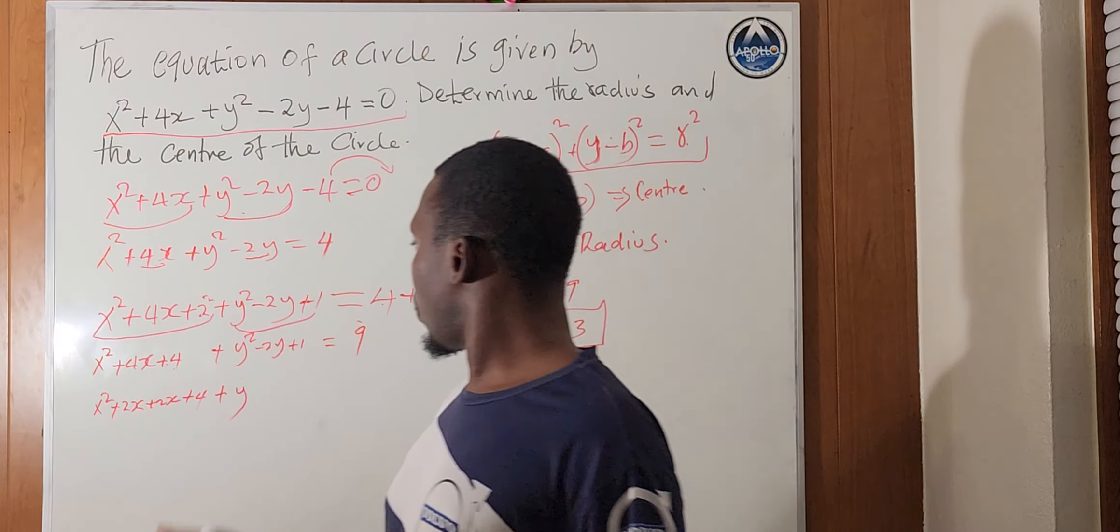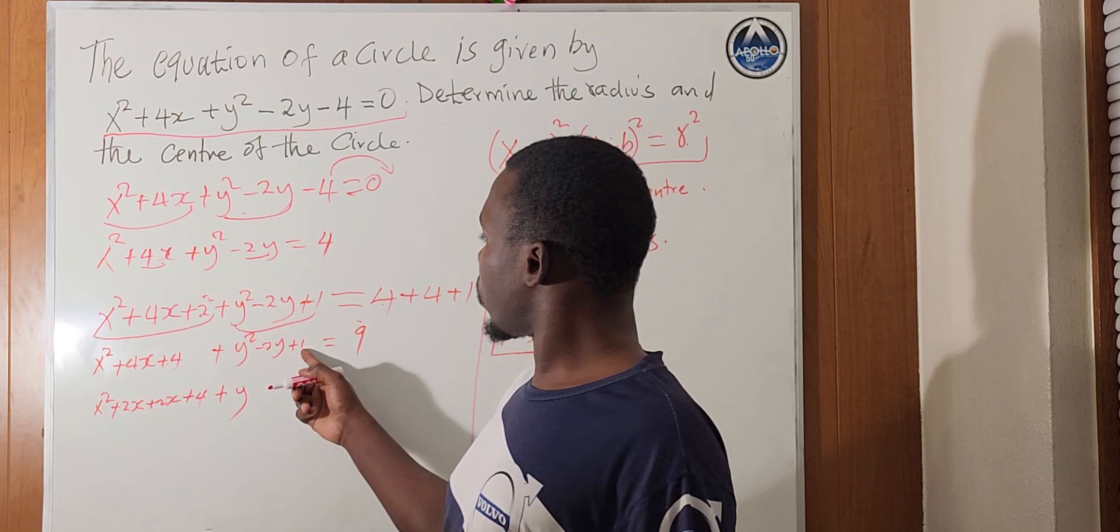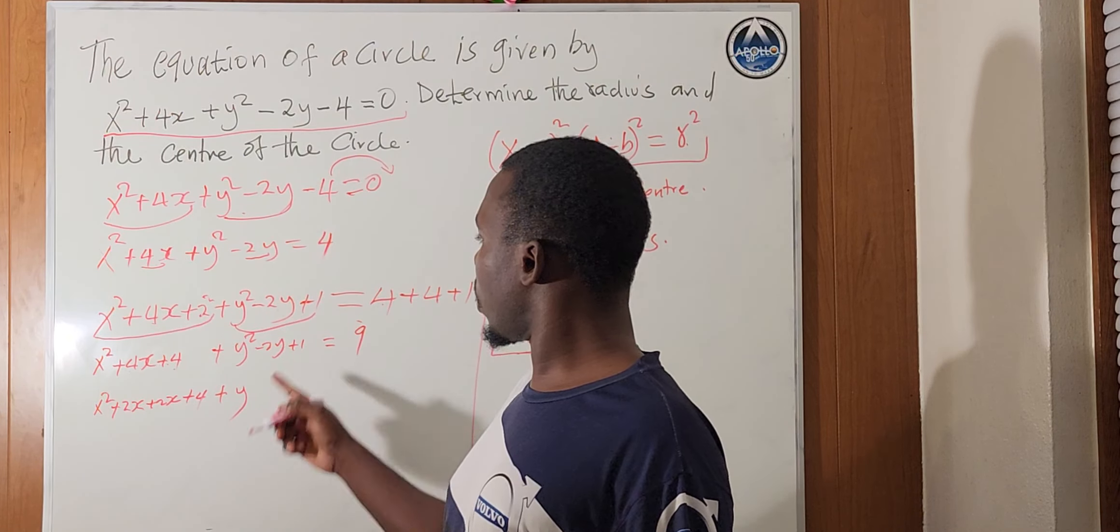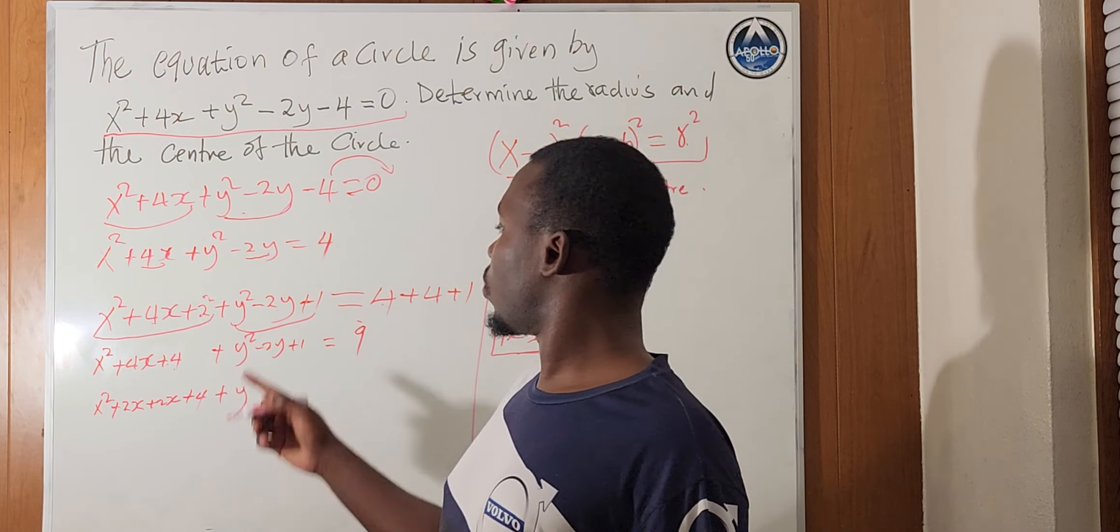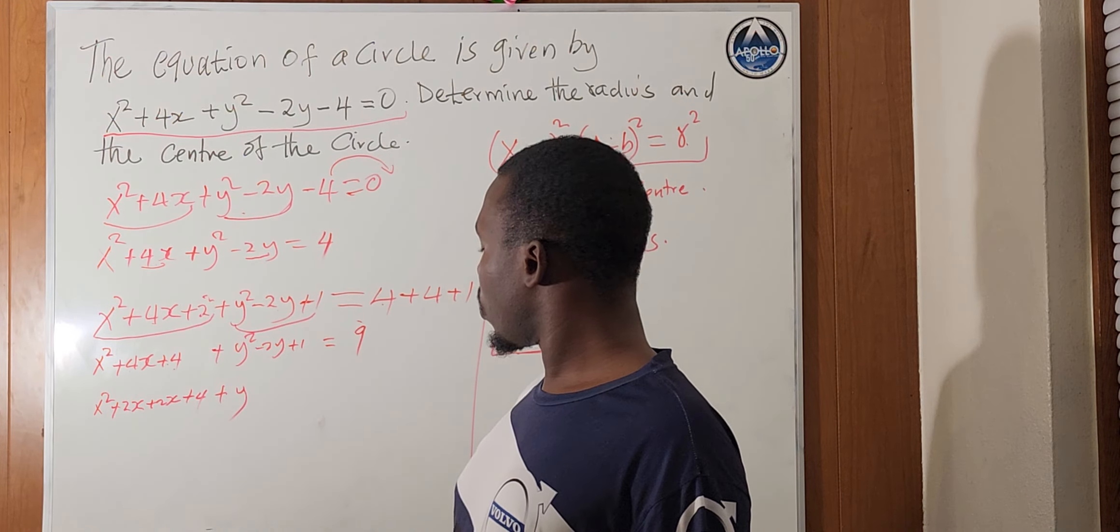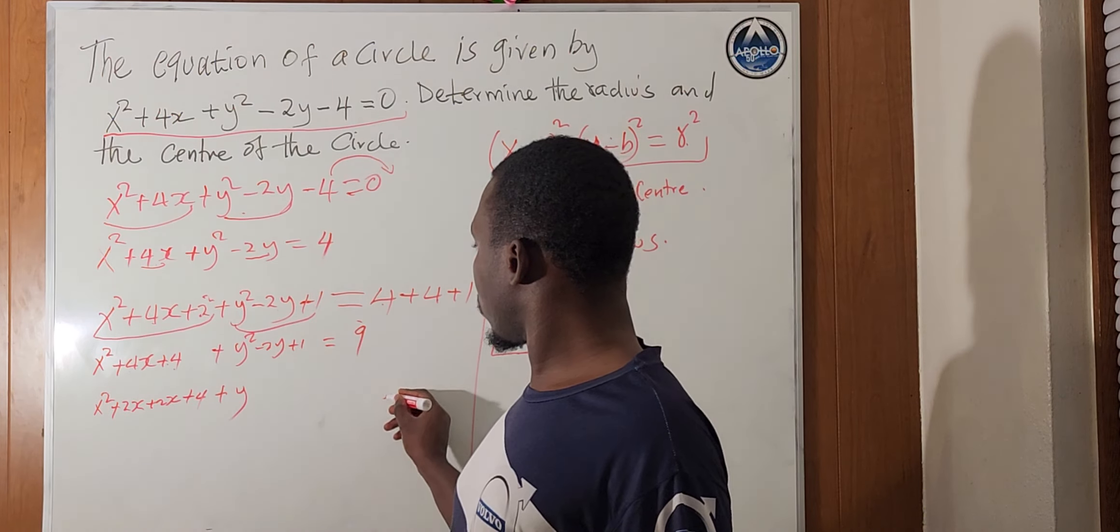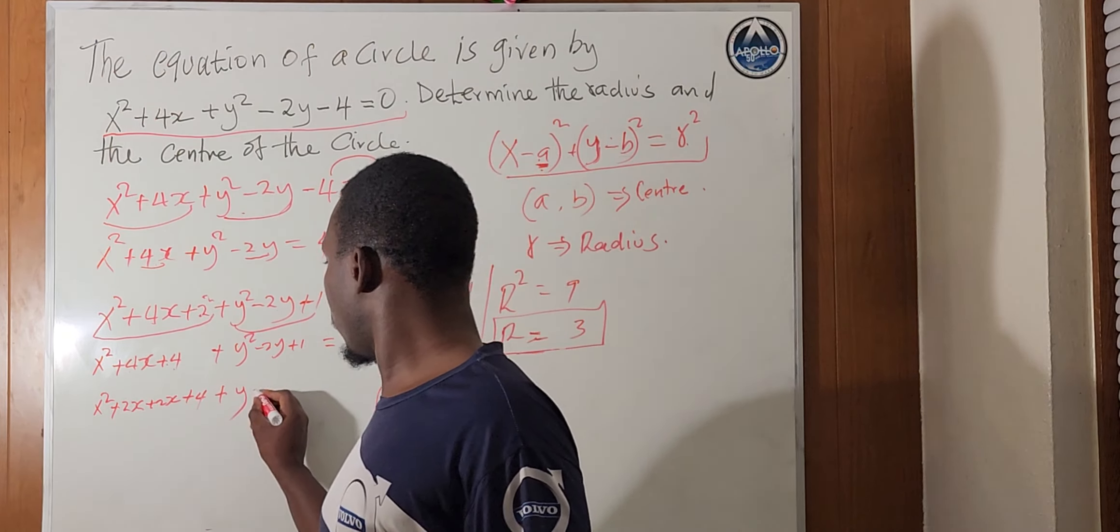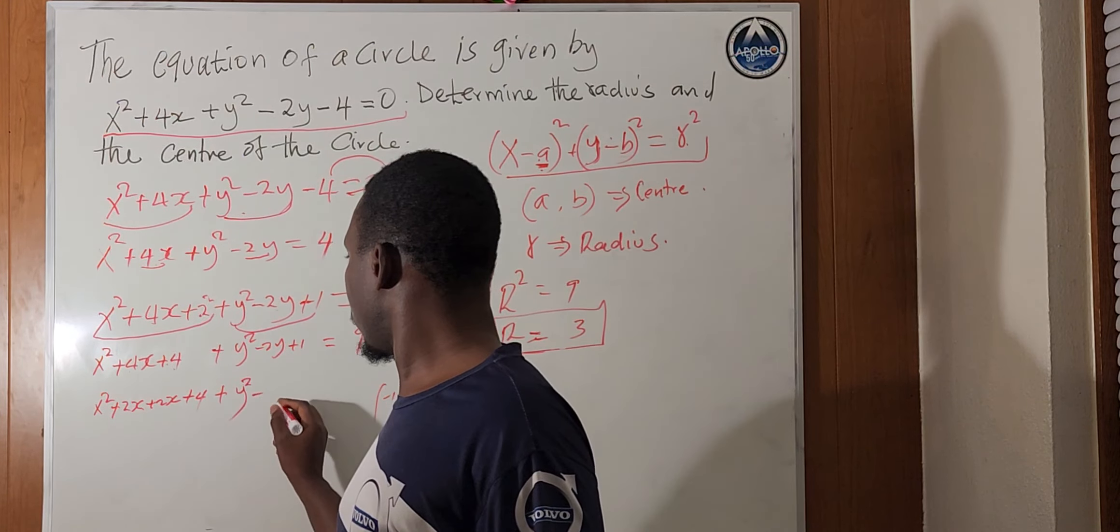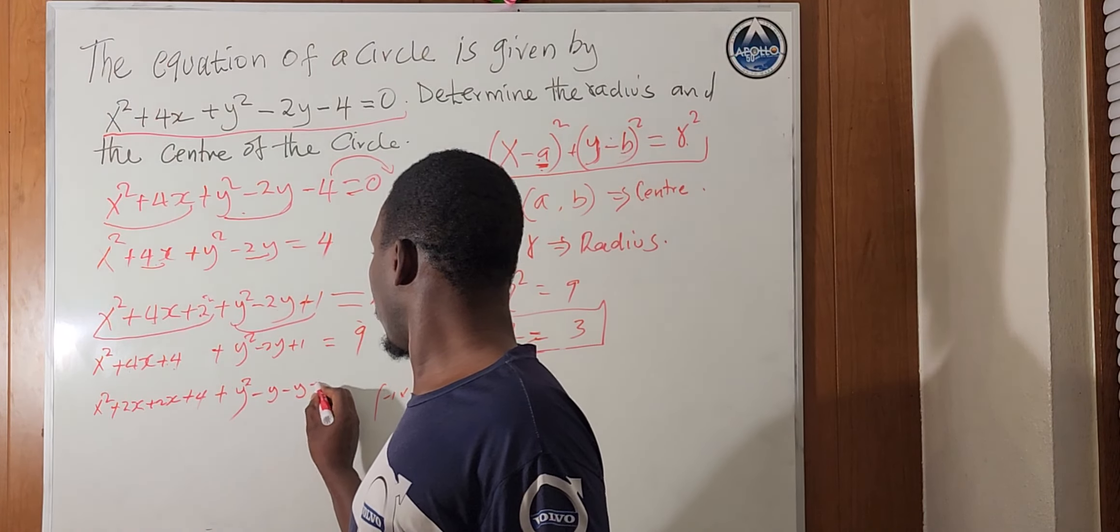Then, plus, again, y here. Let's get 2 numbers. When you multiply, you get 1, but when you add them, you get minus 2. So, that is probably minus 1 times minus 1. So, we'll have y squared minus y minus y plus 1.